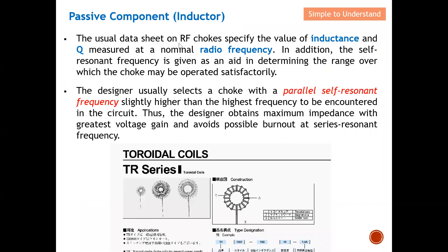The usual datasheet for an RF choke specifies the inductor value and Q measured at a nominal radio frequency. In addition, the self-resonant frequency is given as an aid in determining the range over which the choke may be operated satisfactorily. Anything above the self-resonant frequency causes the inductor to take on capacitive characteristics, which is not desired. The datasheet provides the self-resonant frequency so you can ensure your operating frequency remains below it.